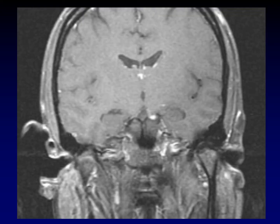Here's that same patient with lymphoma, just to show that same anatomic relationship. Basilar artery coming up, here is the posterior cerebral artery, and there is the abnormally enhancing third cranial nerve running right underneath it.